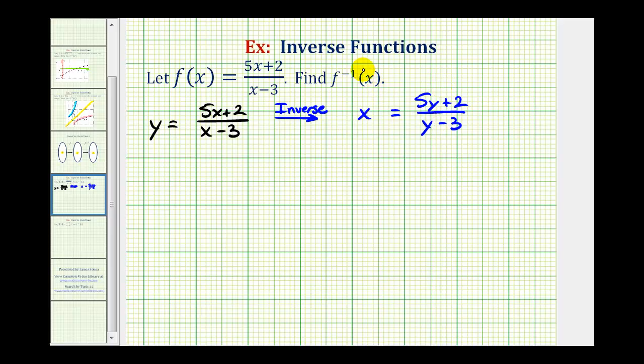And now we're left to solve this for y, and then replace y with inverse function notation. So because the right side is in fraction form, we could put this x over one and then cross multiply, meaning x times the quantity y minus three must equal one times the quantity five y plus two. Or we could just multiply both sides by the quantity y minus three. Either way, we would have x times the quantity y minus three equals five y plus two.